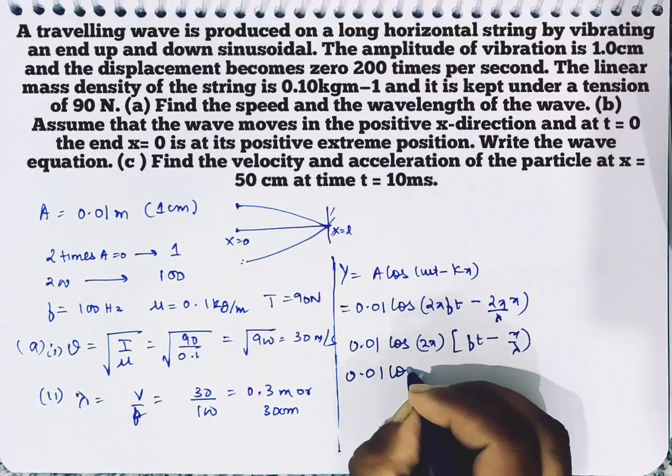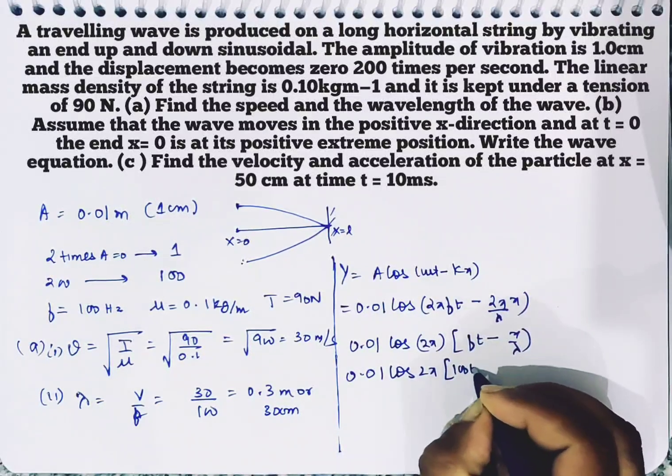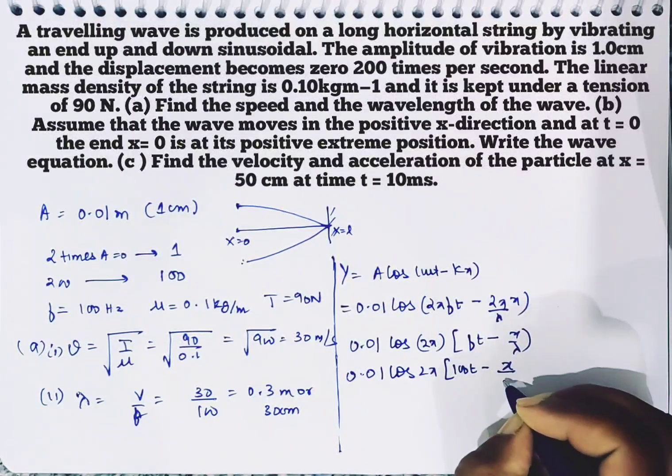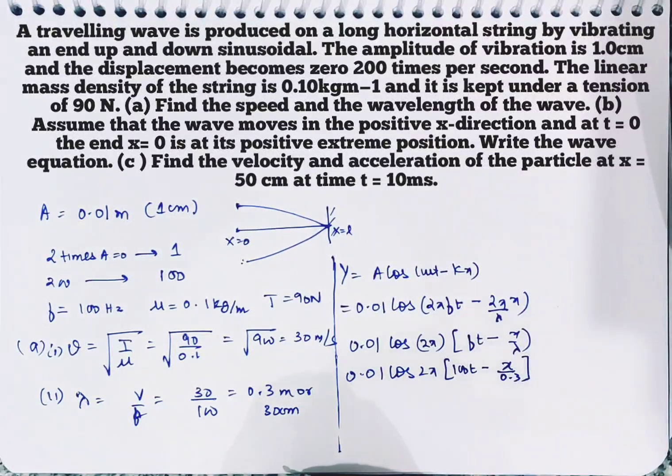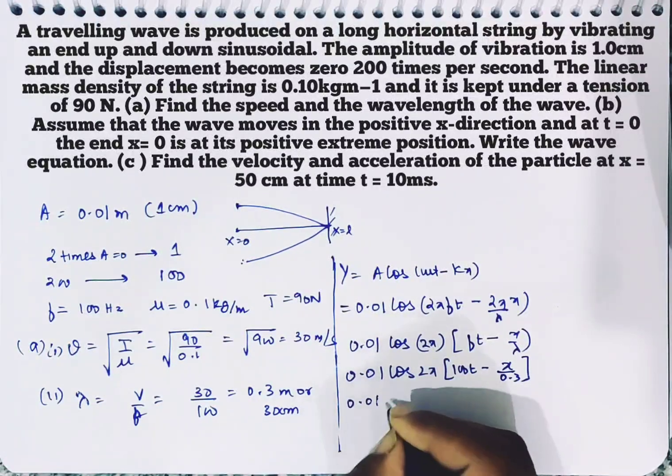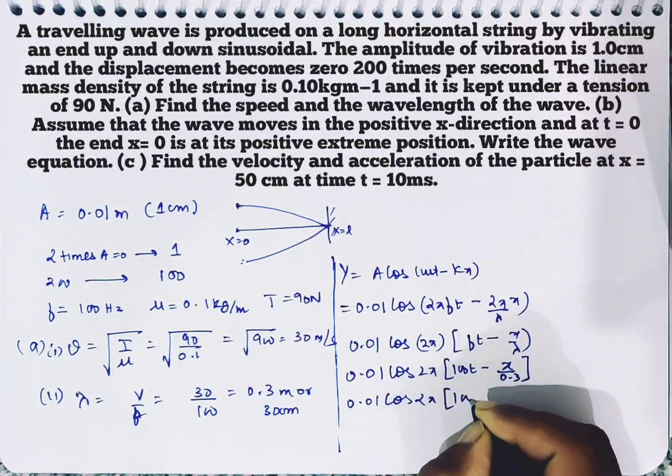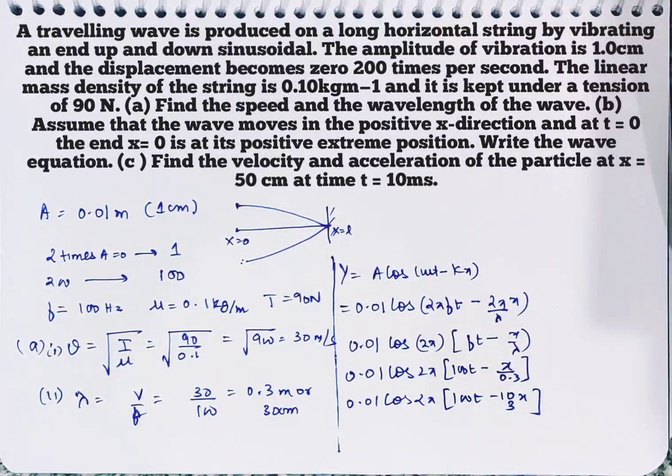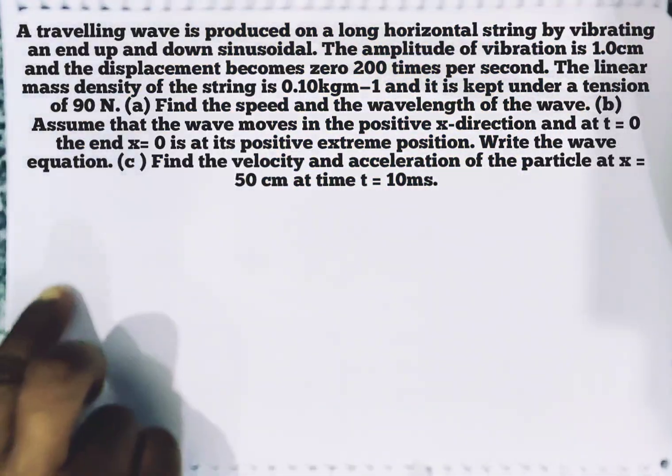0.01 cos 2 pi, f is 100, so 100t minus x by lambda which is 0.3. So that is the equation for displacement. Next, find the velocity and acceleration of particle at x equal to 50 cm at t equal to 10 milliseconds.